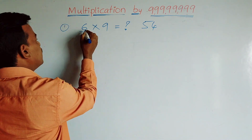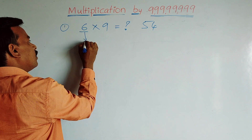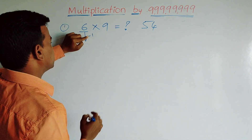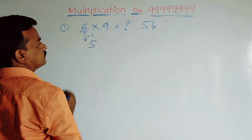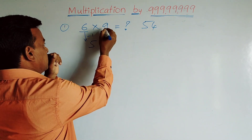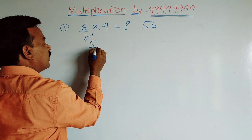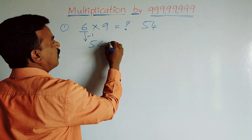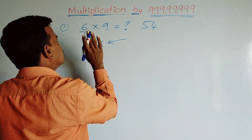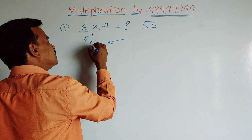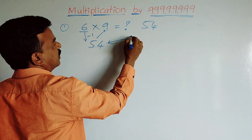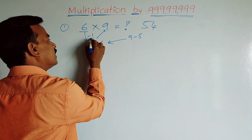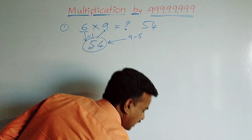What is the trick? To write the first part of the answer, subtract 1 from the multiplicand: 6 minus 1 equals 5. Then to get the next digit, subtract that result from 9: 9 minus 5 equals 4. So the answer is 54. That is why 54 is the answer for 6 × 9.